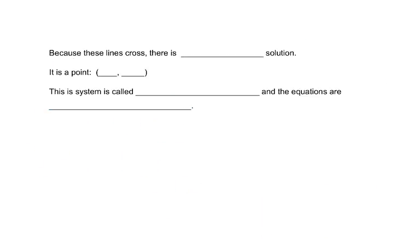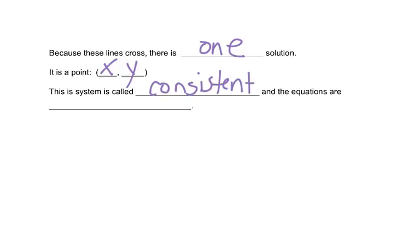Because these lines cross, there is one solution. The solution is always written as an ordered pair — an x and a y. This system is consistent because there's an answer, and it's called independent because the two lines are different lines.